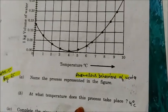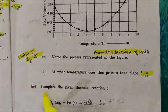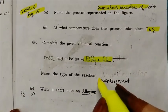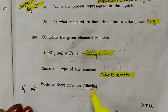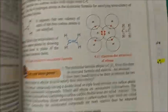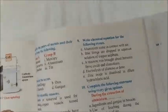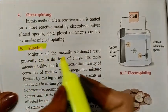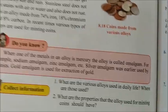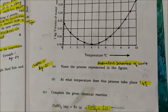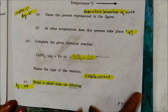At what temperature does this occur? 4°C. Complete the chemical reaction: CuSO₄ + Fe → FeSO₄ + Cu. The type of reaction is a displacement reaction. Write a short note on alloying — it has been taken from page number 108 of your textbook.